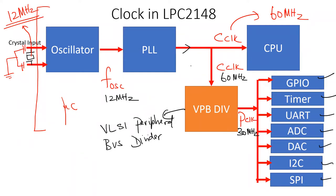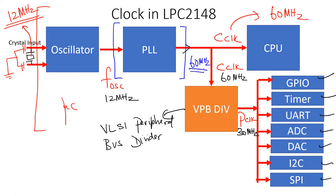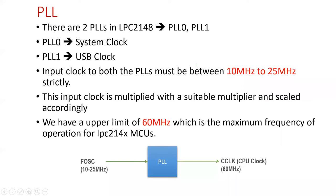Now where is our PLL in this entire chain? The PLL is fitted between the oscillator output and the CPU clock. The PLL essentially takes a clock frequency of 12 MHz from the oscillator and generates 60 MHz output, which is supplied to the CPU as well as to the peripherals via the bus divider. This PLL is a closed loop circuit that takes a reference input and generates a stable output at a desired frequency — 12 MHz input, 60 MHz output.